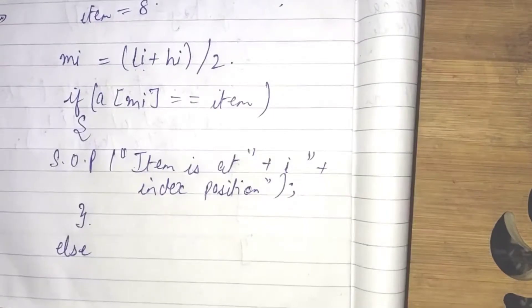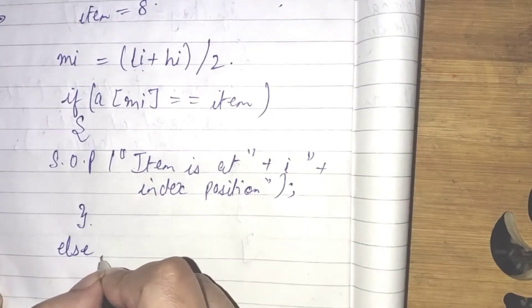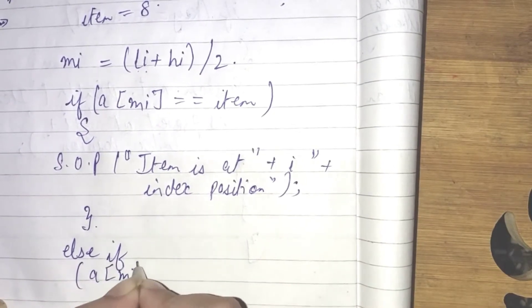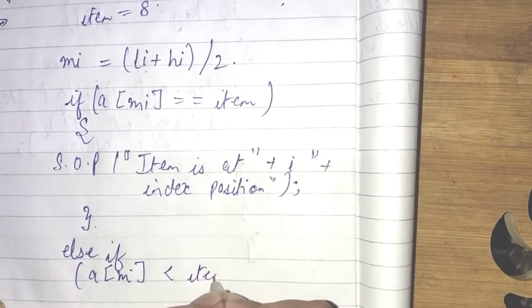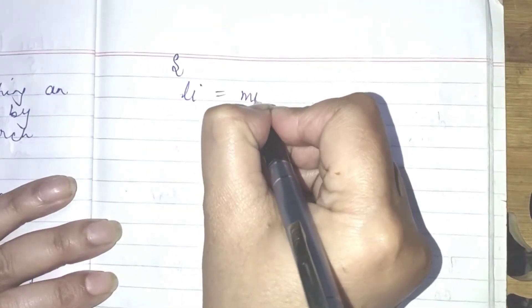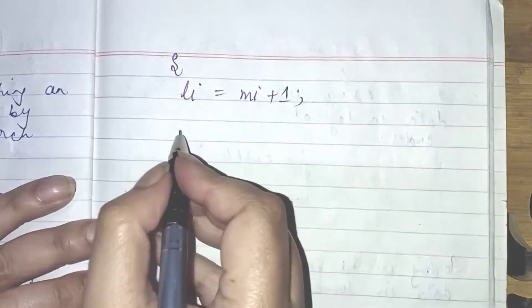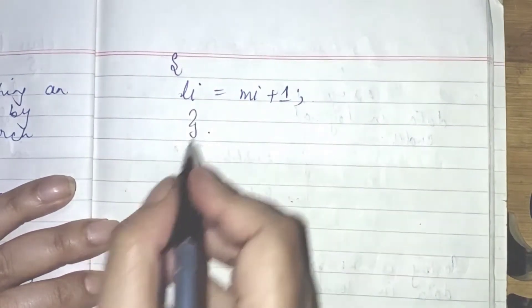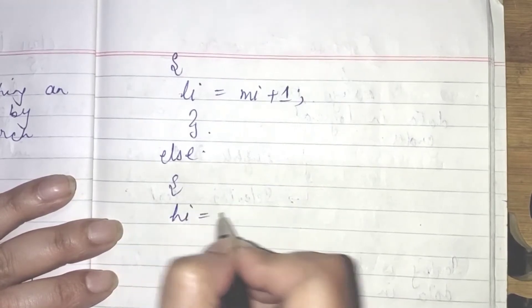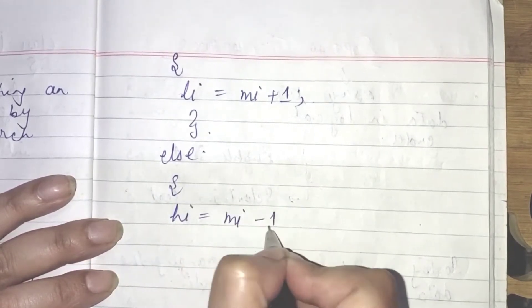Else, if AMI less than item, in that case, we will write lowest item equal to MI plus 1. Let's write first and then I will explain to you. Else, highest item MI minus 1.